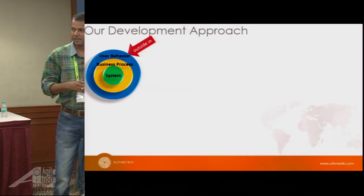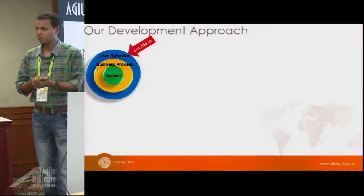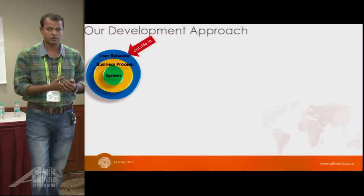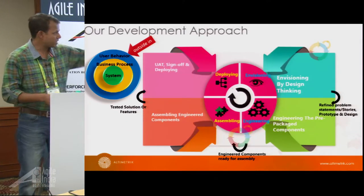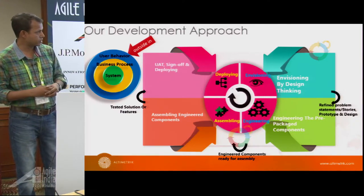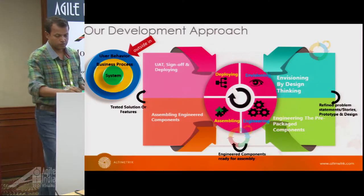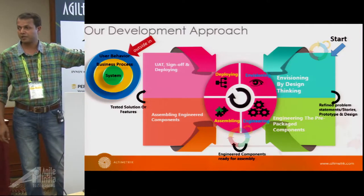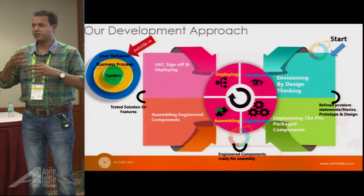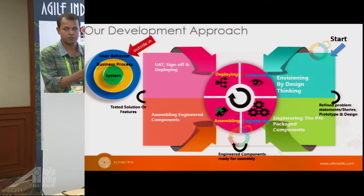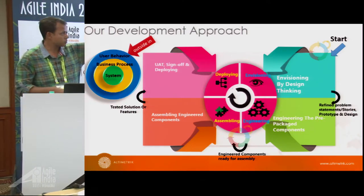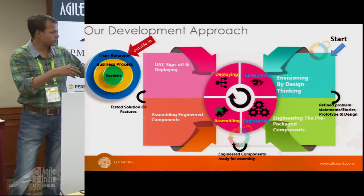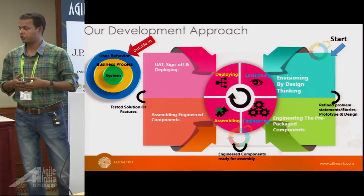This approach also often reduces unnecessary features that we initially think the system might need. The complete development cycle starts with envisioning, then engineering, then assembling, then deployment - but the whole thing goes in an iterative way. It's not like waterfall where we complete envisioning for the entire product and then move to engineering. Envisioning goes in two-week iterations, and then engineering and assembling combine into another two-week iteration, continuing to the next level.